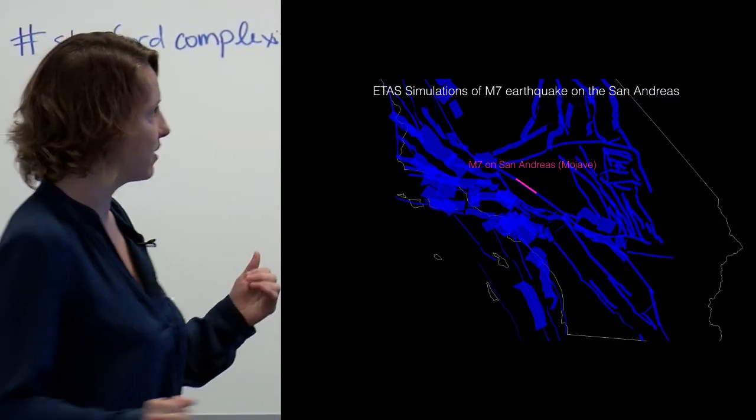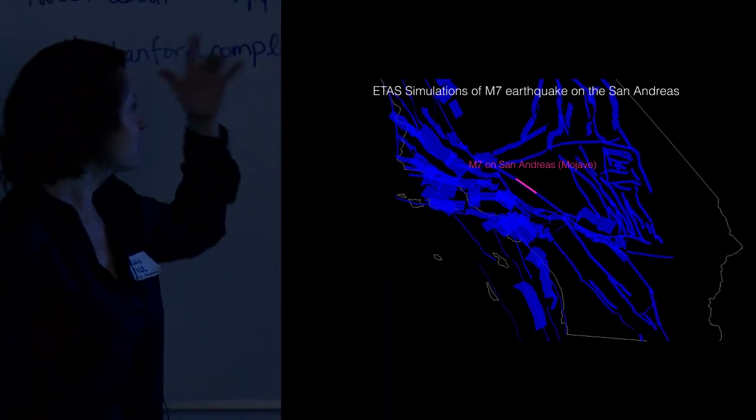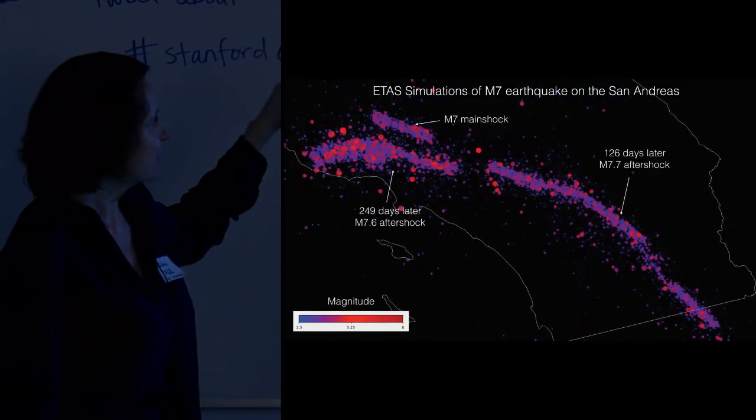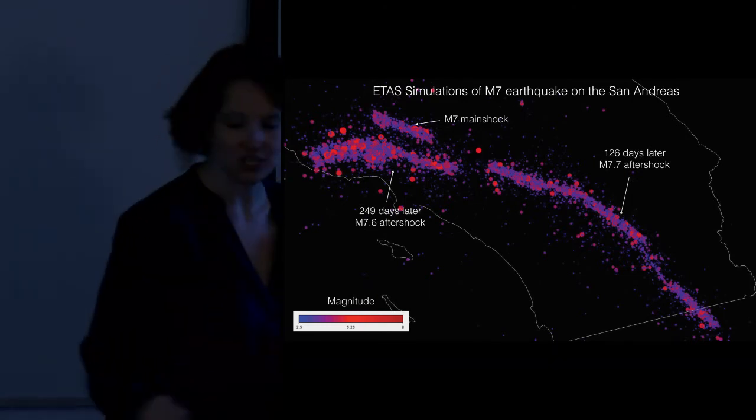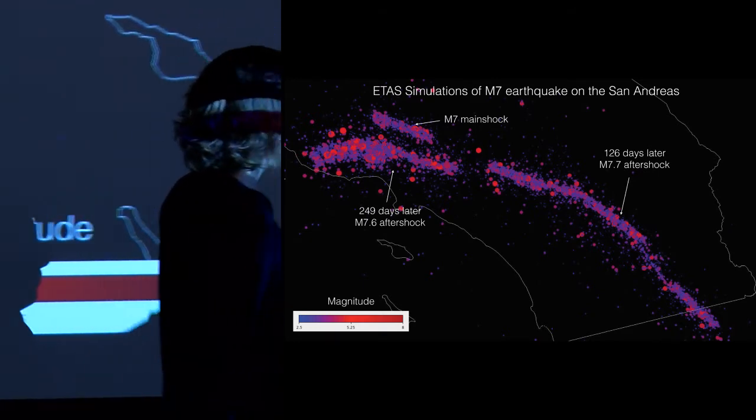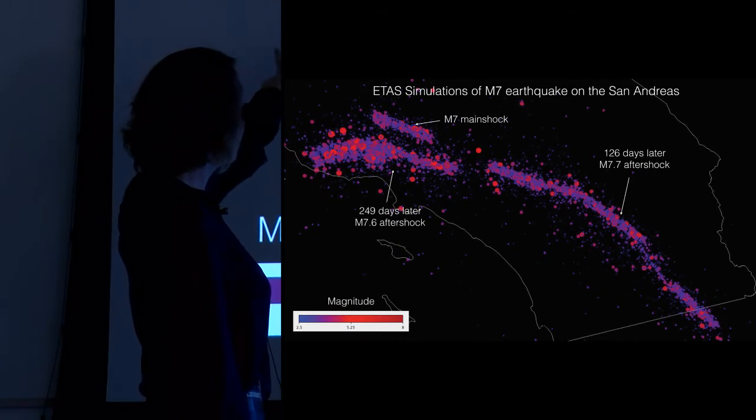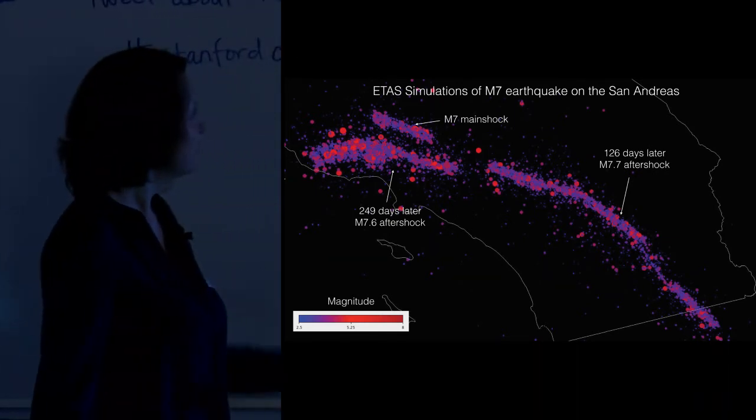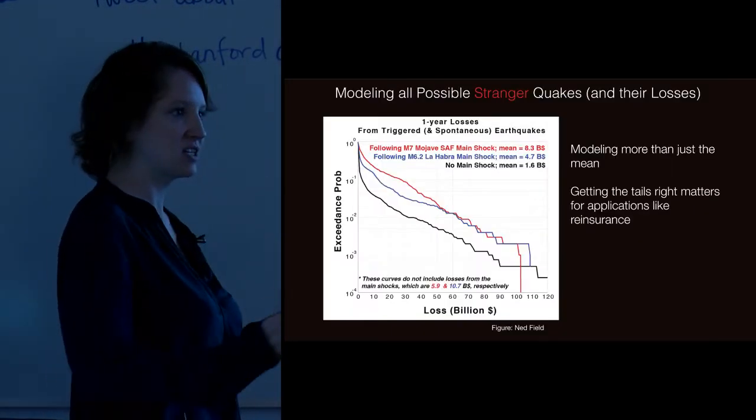So what we've been doing in California is running ETAS models on the fault network, but allowing the faults now to link up to form these stranger quakes, these multi-fault ruptures. This is showing an example of a magnitude 7 on the San Andreas fault on the Mojave section in Southern California. We then run ETAS simulations. At the top, you can see the magnitude 7 main shock and all the little aftershocks that it's triggered. This is one of the ETAS simulations where 126 days later, a section further down in the San Andreas connected with faults through the Brawley seismic zone to make a 7.7 aftershock, maybe the new main shock in some terminology. Then at 249 days later, another aftershock occurred linking up faults in the Ventura basin. This is basically the worst of our 1,000 simulations that we ran.